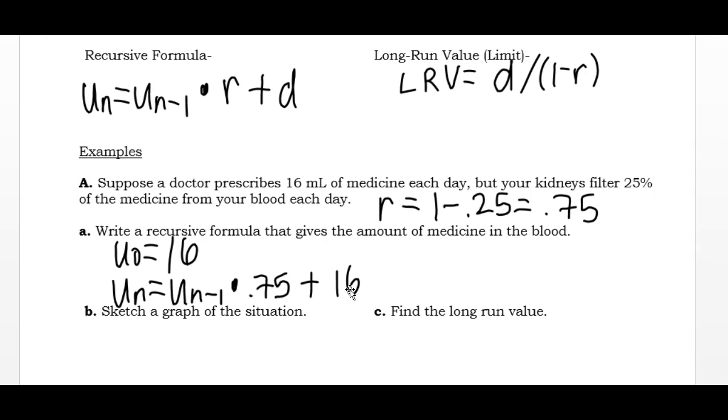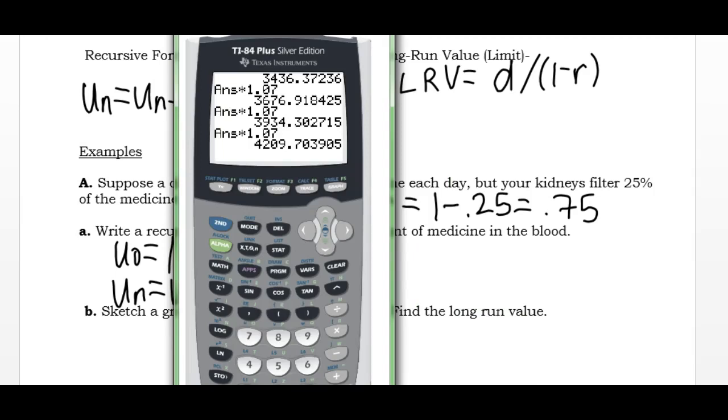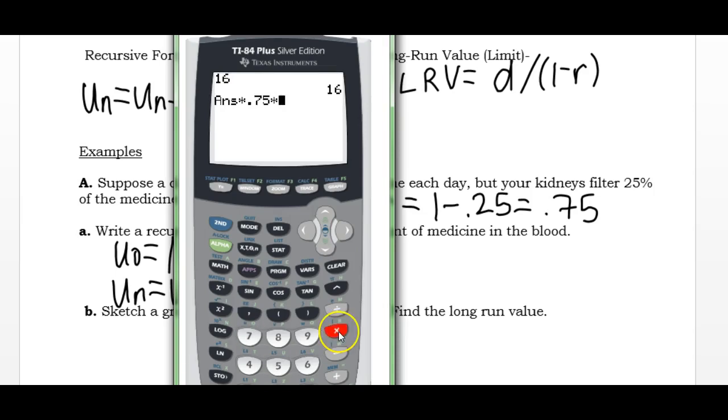I'm going to key this in the calculator just to kind of see what happens. So we're starting with 16 milliliters of medicine. Day goes by and 75% remains after 25% is filtered out. So I'm going to replace that with another 16 milliliter dose. So after the first day then I have 28 milliliters in my bloodstream, and the second day there's 37, and then 44, 49, 53.